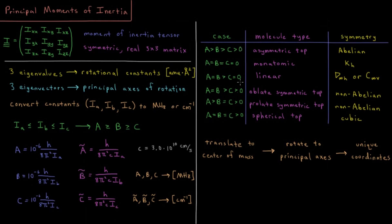Those rotational constants allow us to classify the molecule into different rotor types. The first case is where all three are different and all three are greater than zero. Since we sorted eigenvalues in ascending order, when placed in a denominator they become descending: A ≥ B ≥ C. In the case where all three are different — a different resistance to acceleration around each principal axis — you have what is called an asymmetric top.